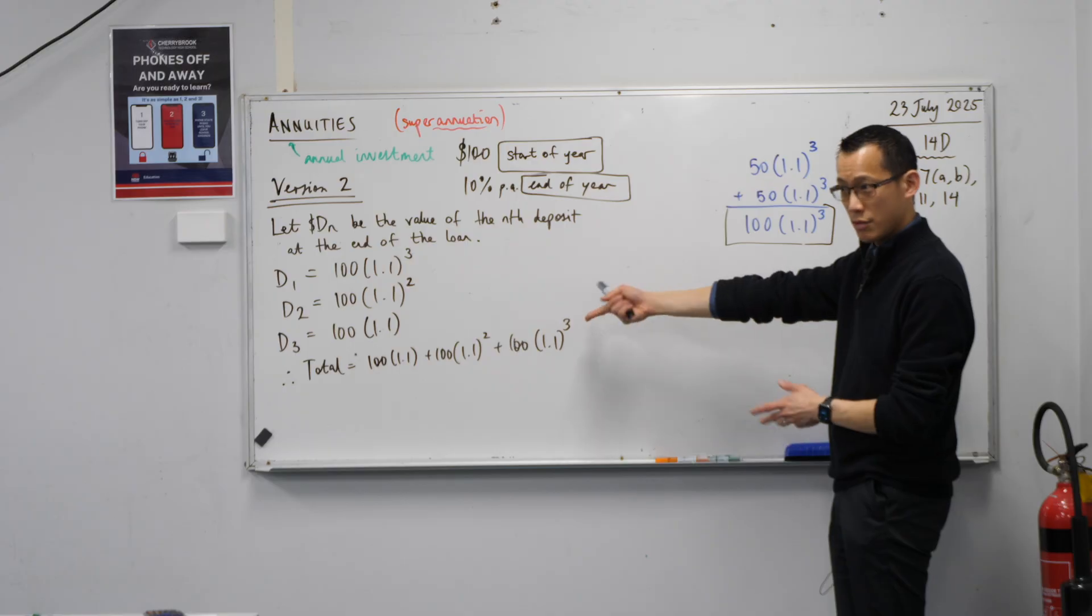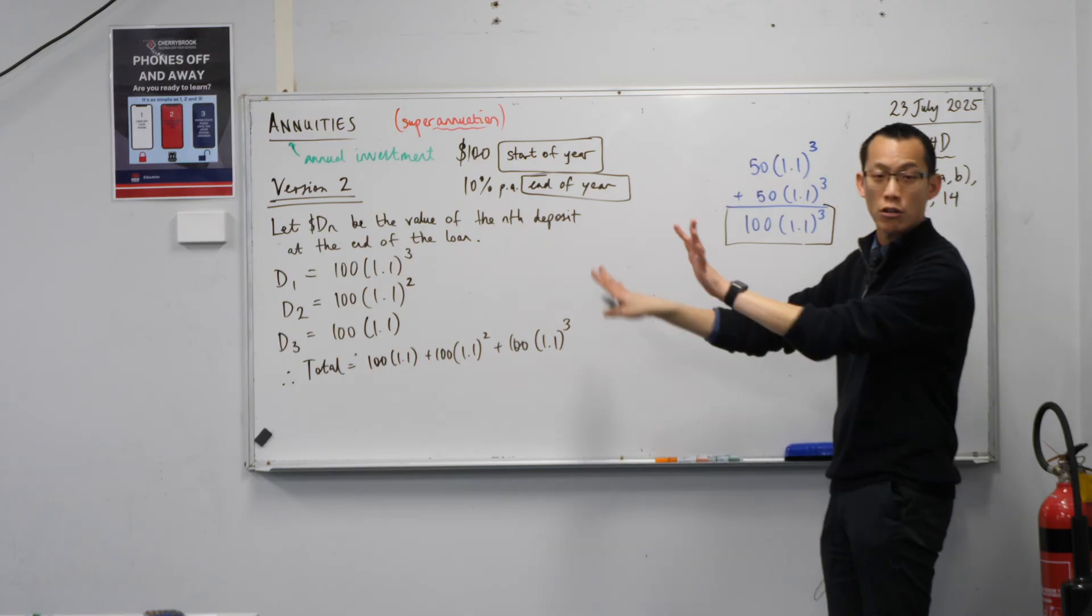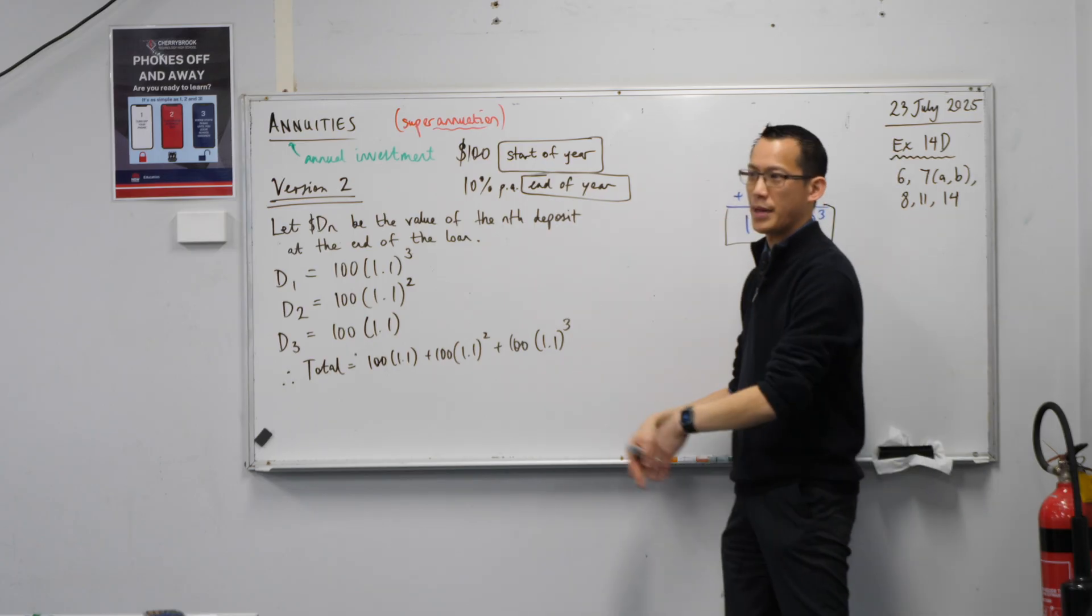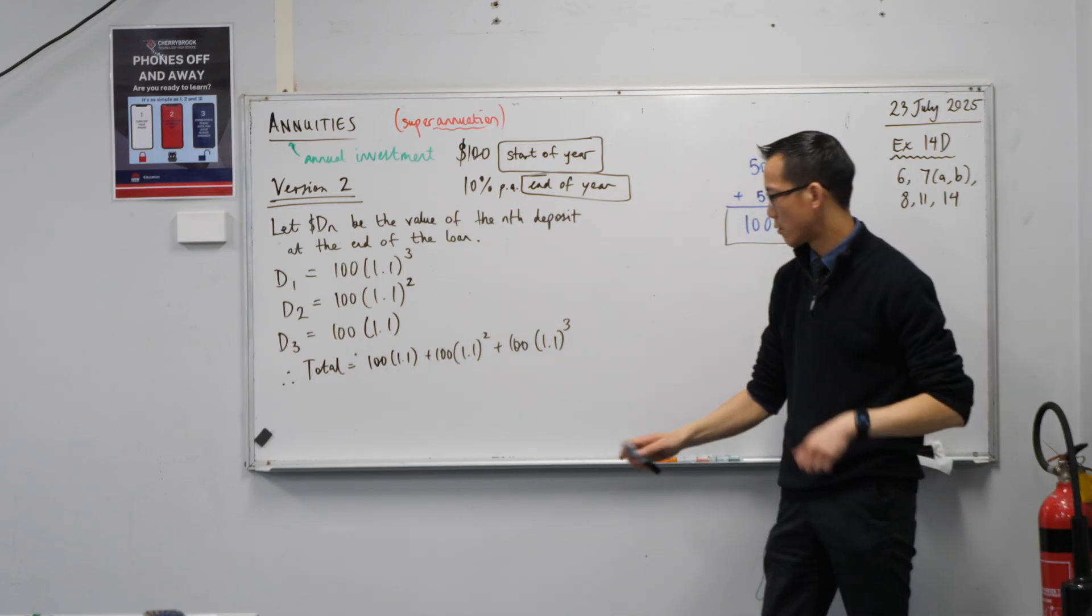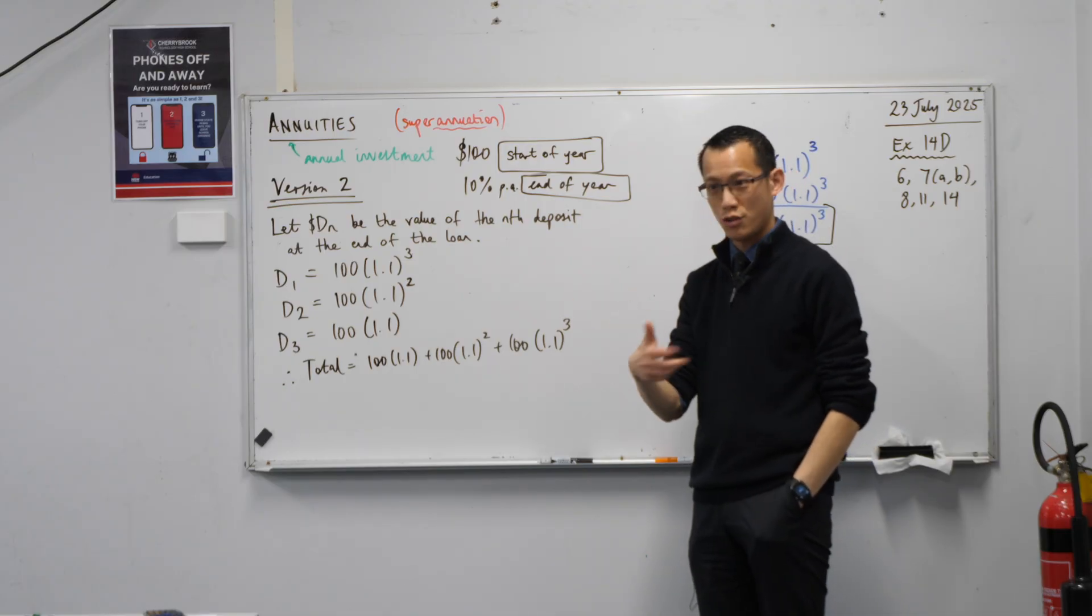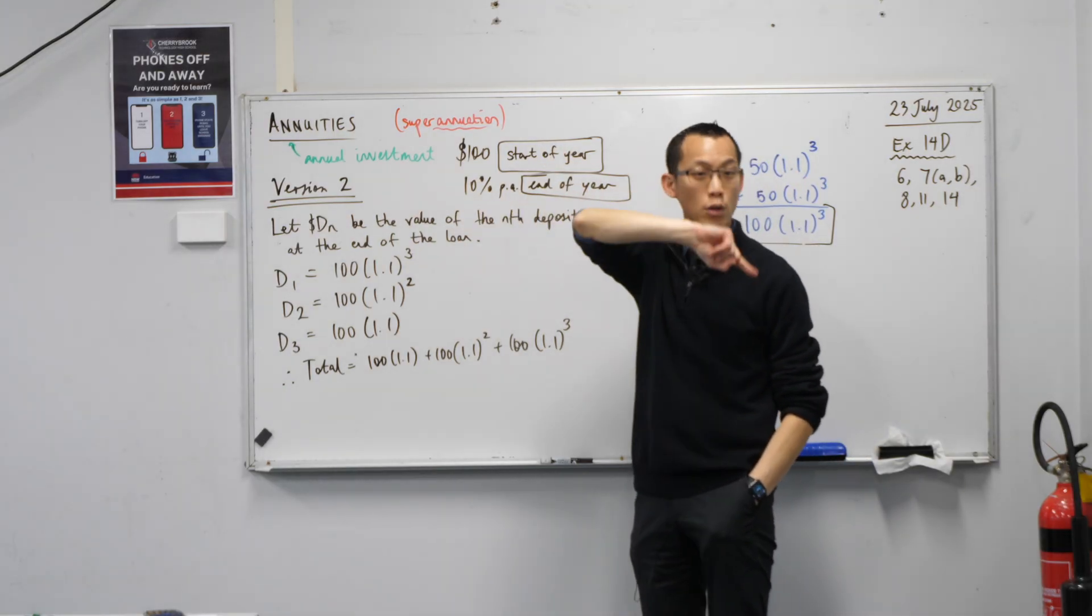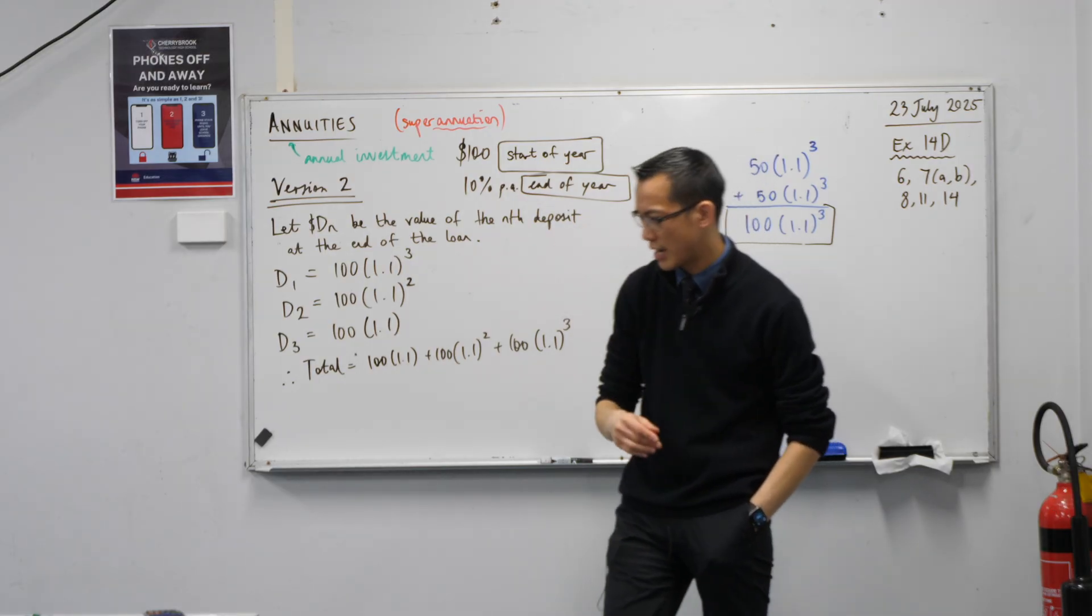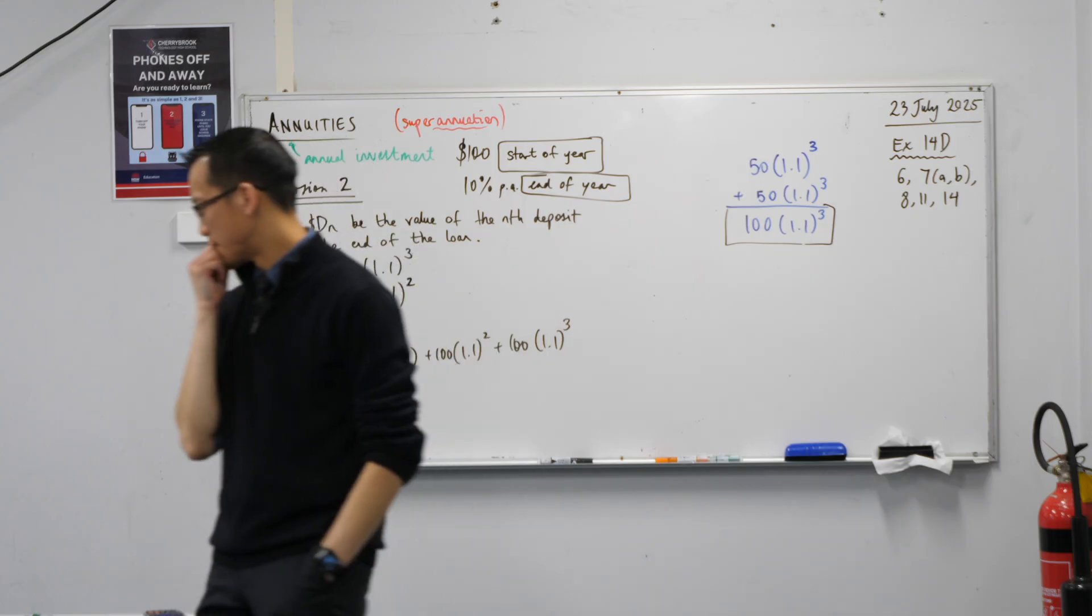And you recognize this line, don't you? We got to this exact same line. I'm not going to do any more working because you know what to do from this point on. You identify the GP, use the formula, off you go. Let me pause for a minute. I'm going to ask you to turn to the person next to you or behind you. You've seen version two. You saw version one. Which one do you like better and why? Have a chat, and then we'll come back together in a minute.